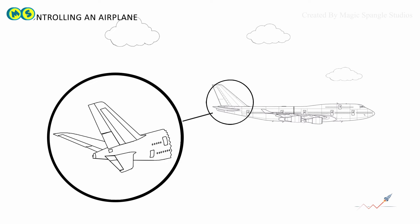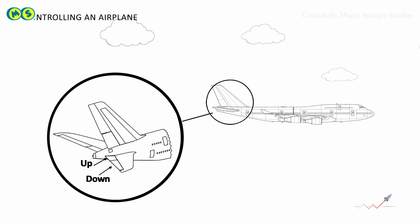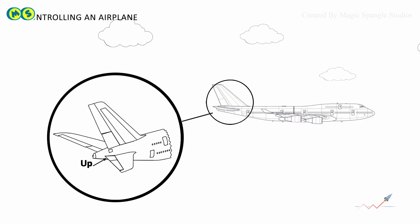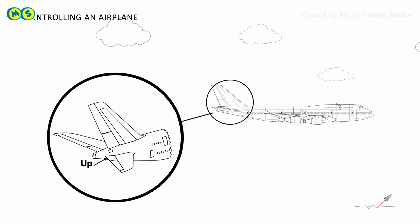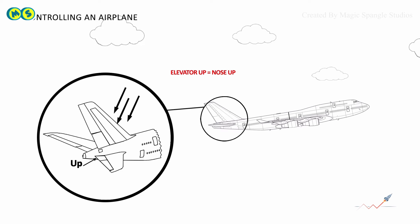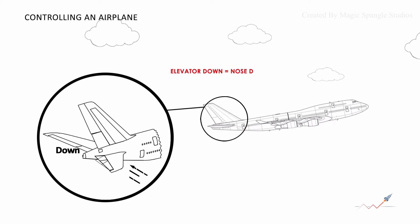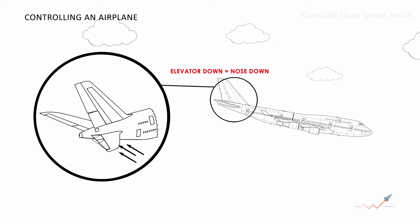The elevator can be deflected up or down to produce a change in the downforce produced by the horizontal tail. If the elevator is deflected upward, it increases the downforce produced by the horizontal tail, causing the nose to pitch upward. If the elevator is deflected downward, then the counteracting force causes the nose to pitch down.